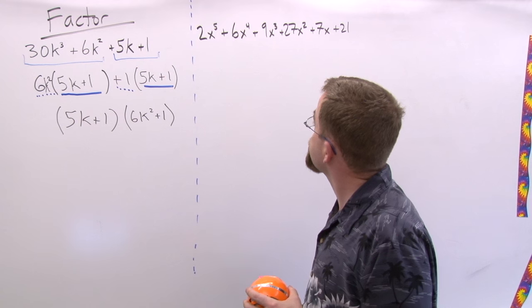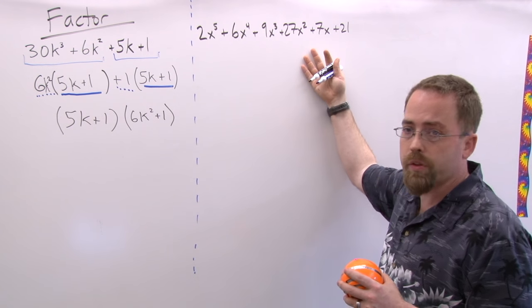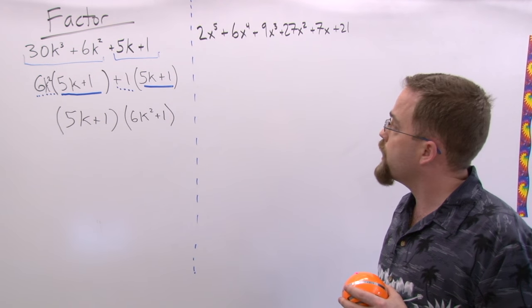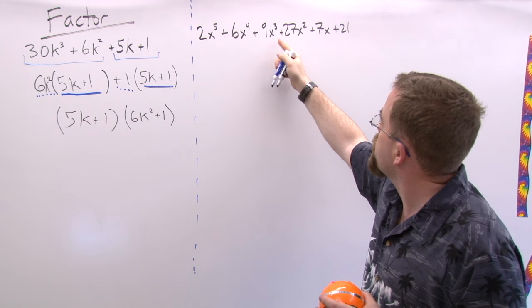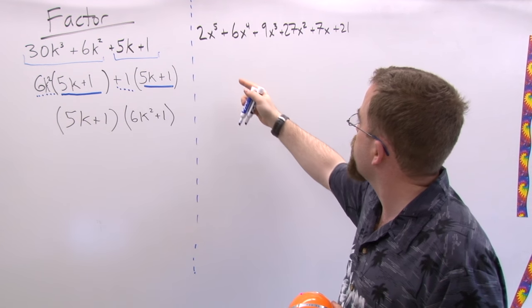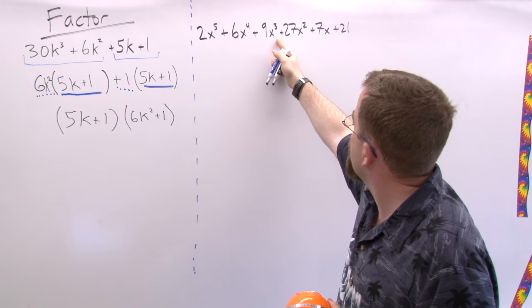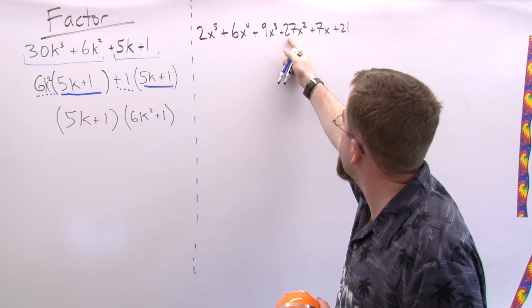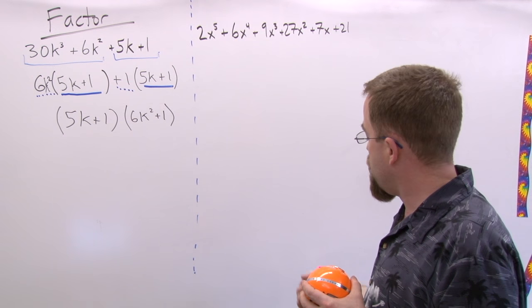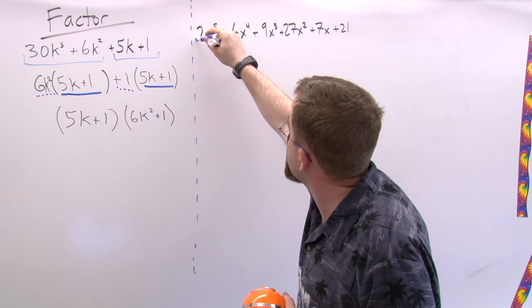Now here's a bigger example of the kind of more complicated thing that could happen with this. But again we look and we see one, two, three, four, five, six terms, so I'm going to try factoring by grouping. Now I don't see a pattern here of three and three, and once we're up to six terms that's something you need to consider, but instead I do see a pattern if I simply take them two at a time.